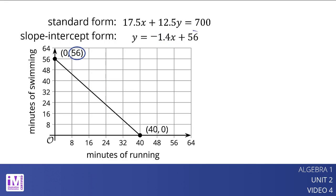The constant term, 56, tells us where the graph intersects the y-axis. It tells us the number of minutes the athlete would need to swim if he does no running.